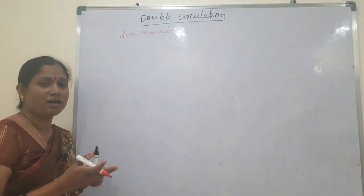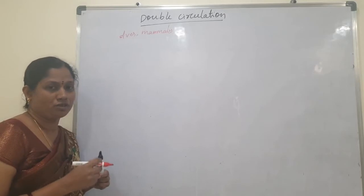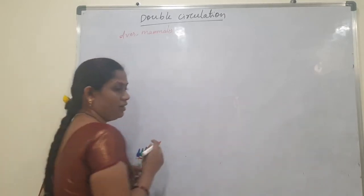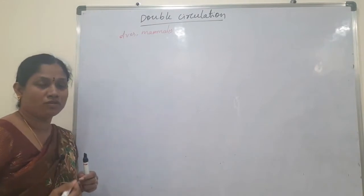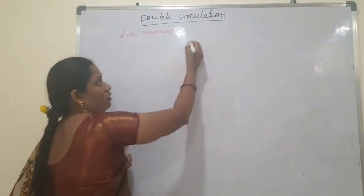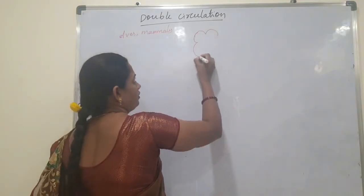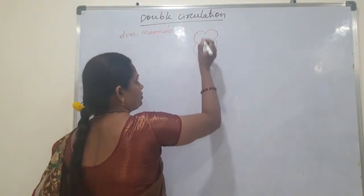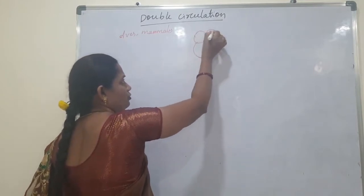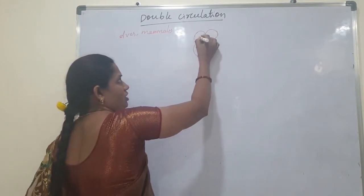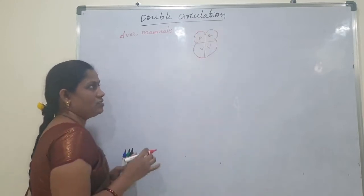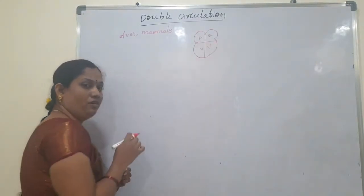In aves and mammals, the heart can be divided into four chambers. The upper chambers are called atria, and the lower chambers are called ventricles.